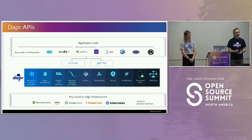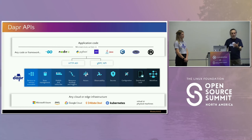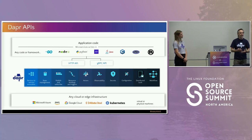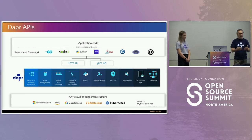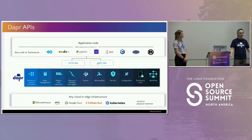Dapr gives you a set of APIs you can leverage over HTTP or gRPC. You can approach this from any language of your choice — Go, Node, .NET — it really doesn't matter. There are libraries or SDKs to help. For example, if you want to communicate between two applications, it has an API called Service-to-Service Invocation. That allows you to talk from one application to another securely, with discoverability and retries — all the heavy lifting done on your behalf.